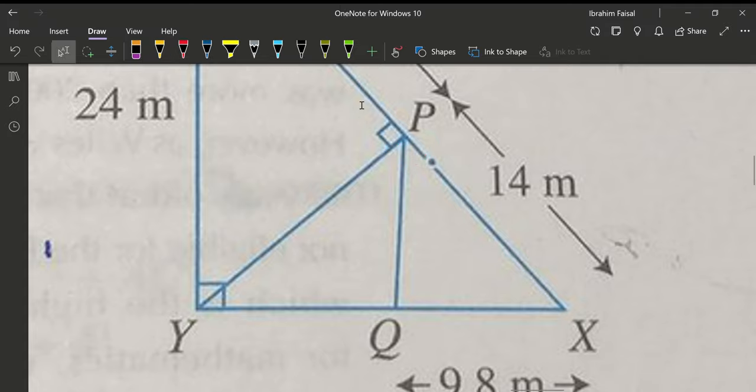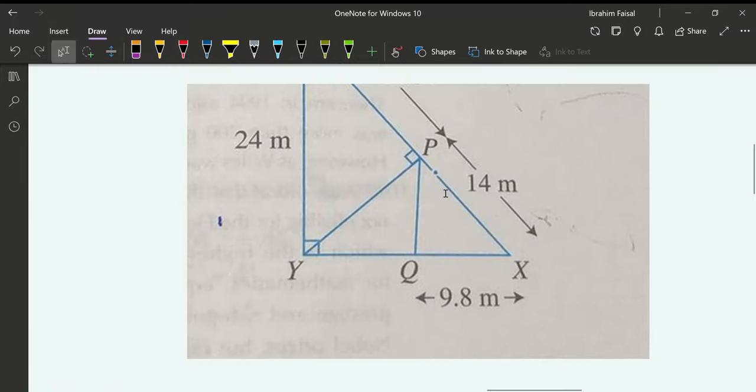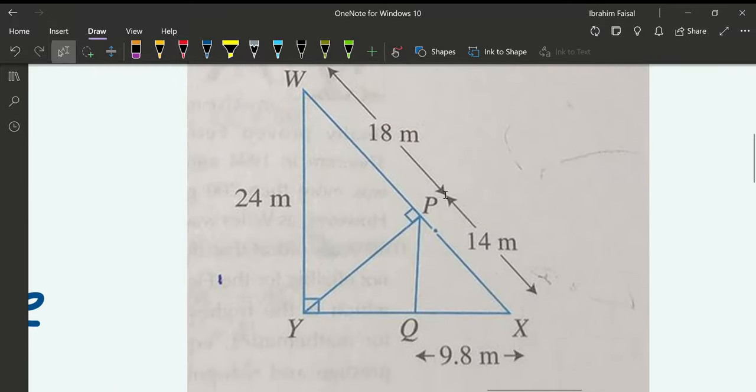And here they have done it. The above triangle, which is WPY, is a right angle triangle where P is 90 degrees. Which means that, obviously, this value will be 90 degrees.